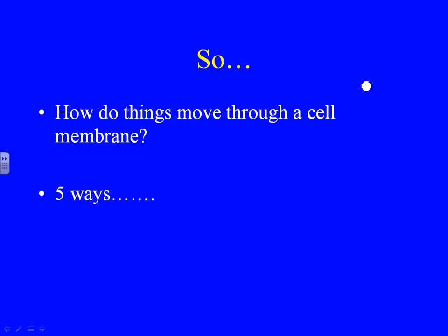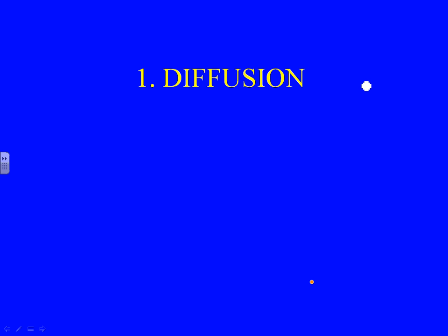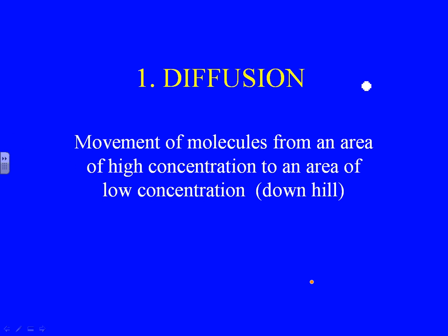There are five ways things get in and out of cells. Way number one is diffusion. Diffusion is the movement of molecules from an area of high concentration to an area of low concentration — what we call moving downhill. When you walk into a place that has just made chocolate chip cookies, you're smelling molecules of chocolate chip cookie that have moved through the air to reach you.